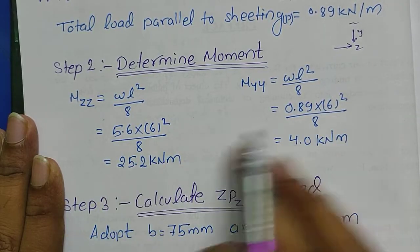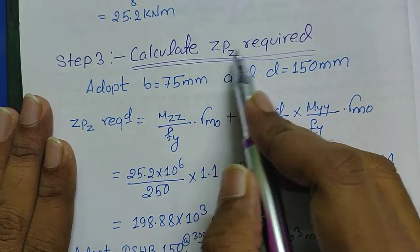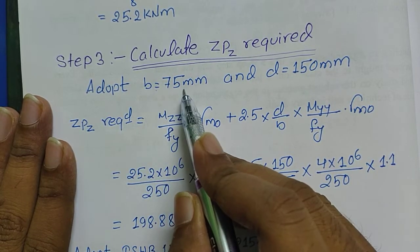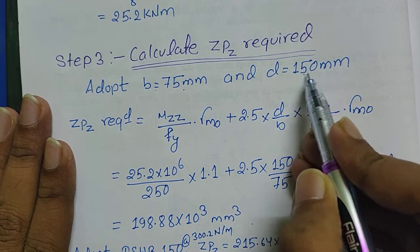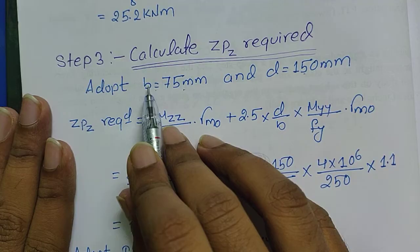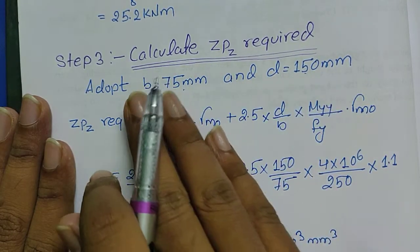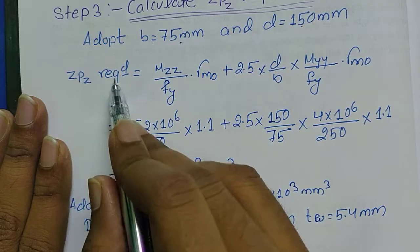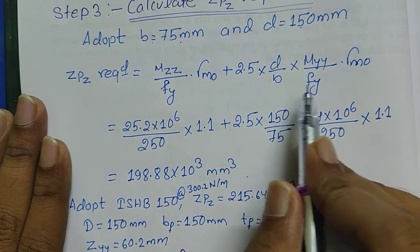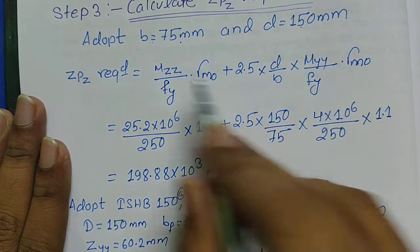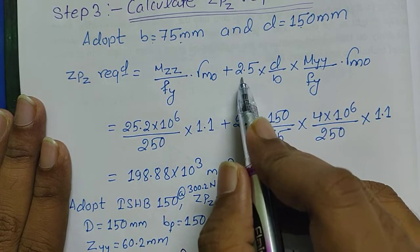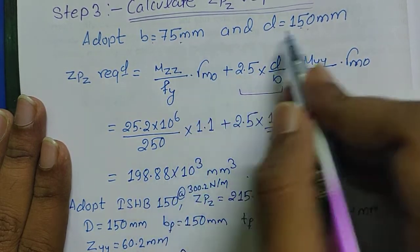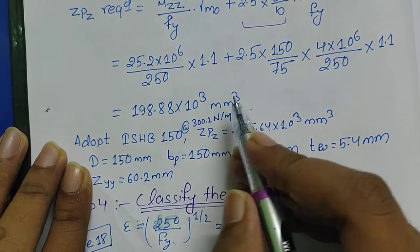Now comes Step 3, calculate ZPZ requirements. For that we adopt B is equal to 75 millimeter and D is equal to 150 millimeter. It should be adopted such that D is actually twice of B, means depth is actually twice of width. For finding ZPZ required we have a formula. This is the formula which is not mentioned in the code, you have to remember this formula. The difference is MZZ and MYY and the external terms are 2.5 D by B. This is 150 by 75 which is actually two times. Now ZPZ required is this much.